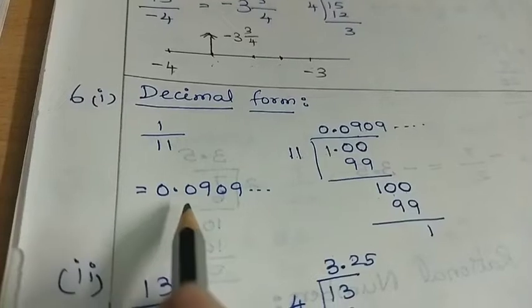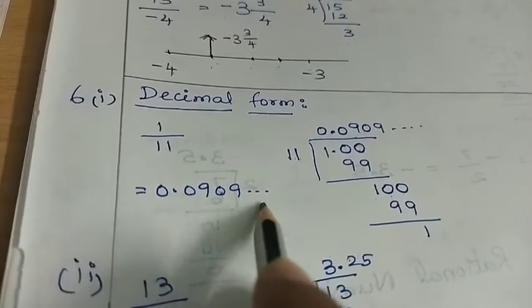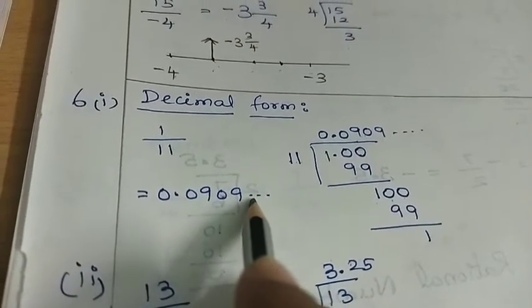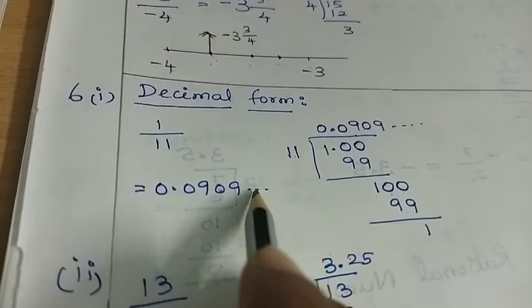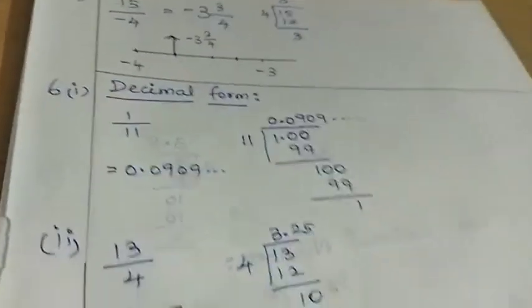The value is 0.0909, dot dot, it goes on.